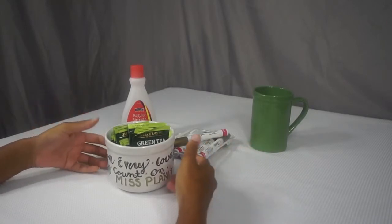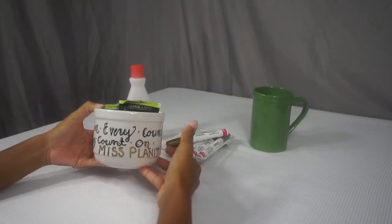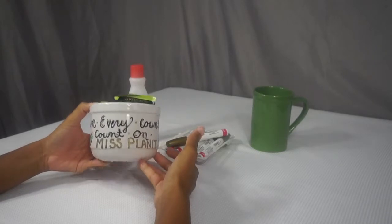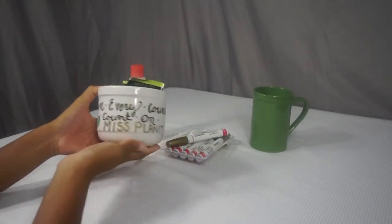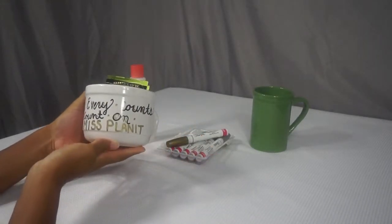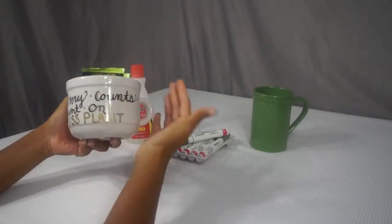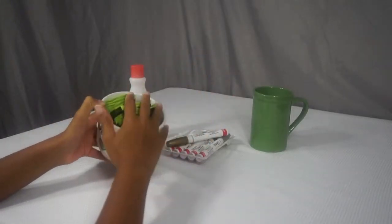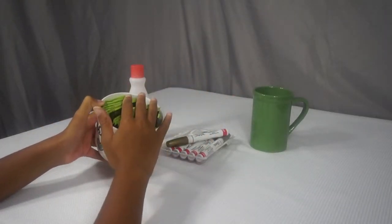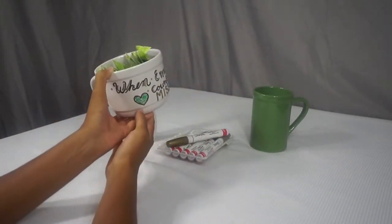So what we're doing today is a really easy under $2 mug project, and here's an example of one right here I did for my mom. When every penny counts, well everything counts, count on this planet. I filled it with green tea because it's her favorite thing to drink, and I put the little logo on the side.